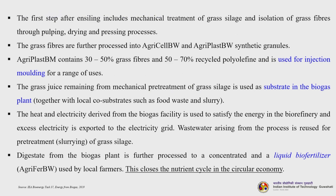The first step after ensilage includes mechanical treatment of the grass silage and isolation of grass fibres through pulping, drying and pressing. The grass fibres are further processed into Agri-Cell and Agri-Plast synthetic granules. Agri-Plast contains 30 to 50 percent grass fibres and 50 to 70 percent recycled polyolefin and is used for injection moulding for a range of applications. The grass juice remaining from mechanical pretreatment of the grass silage is used as substrate in the biogas plant, together with local co-substrates such as food waste and slurry. The heat and electricity from the biogas facility satisfy the energy needs of the biorefinery, and excess electricity is exported to the grid.